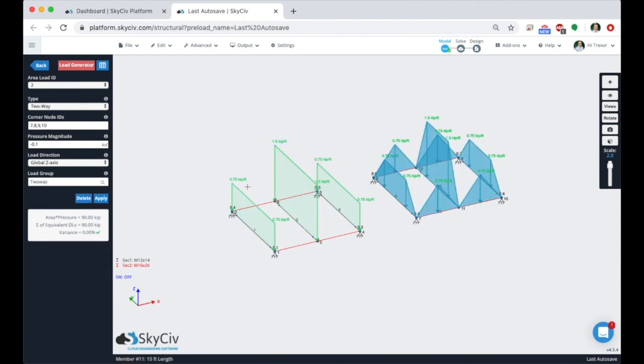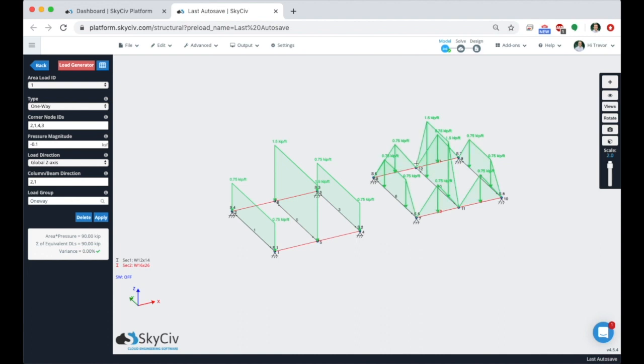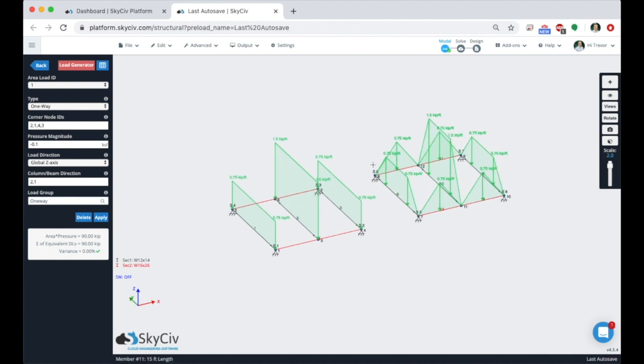We go to the two-way load, we're seeing that same area multiplied by pressure and the same equivalent dead load summation. So the actual sum of loads is the same. It's just obviously the differences in how the loads are distributed. So that's going to actually wrap up our demonstration here in Structural 3D. Hopefully you found this video useful. Make sure to check out our software documentation for more useful information about SkySiv Structural 3D and other topics.